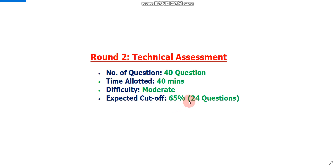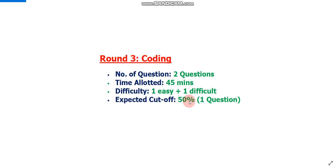Round 3 was the coding round. There were a total of 2 questions and you had to solve them in 45 minutes. One question was easy and one question was difficult. The expected cutoff of this round is 50%, meaning if you solved at least one question out of the two, you are expected to qualify this round.